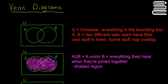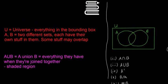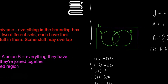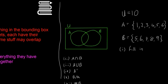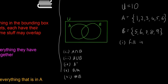So they're all the symbols and what they mean. Now we're going to look at a quick example. So here we have our box, we have our set A and B.